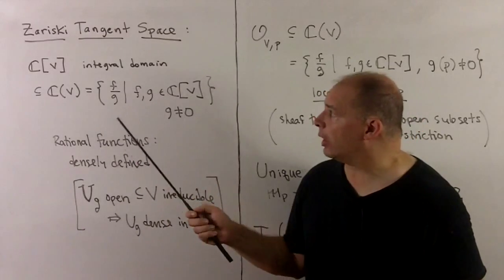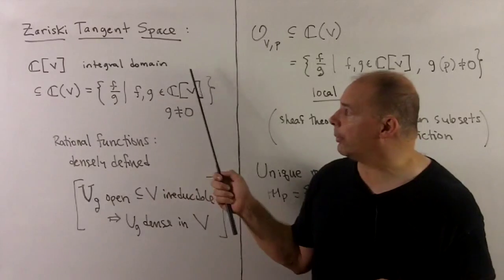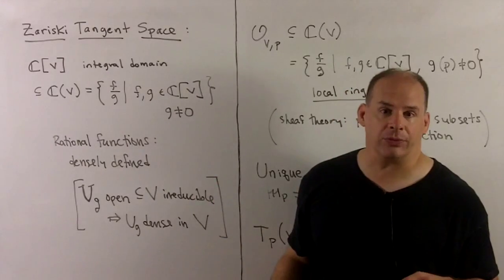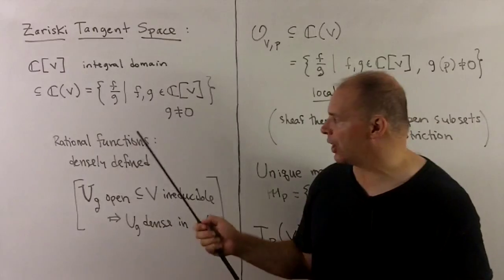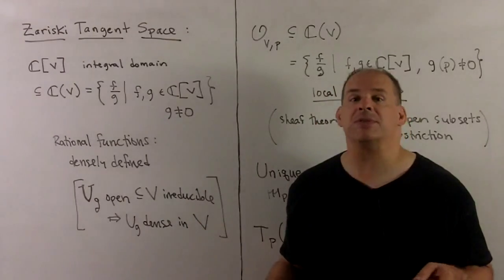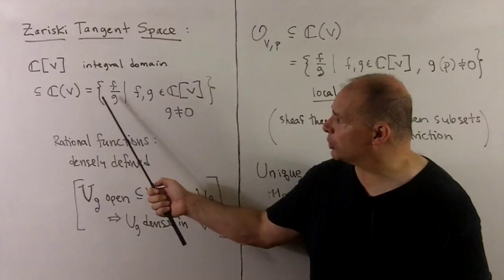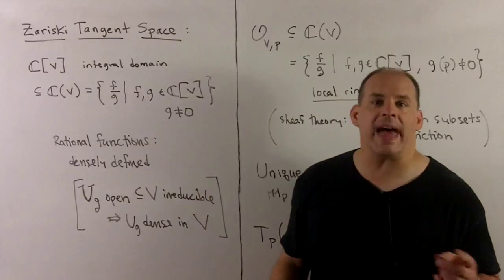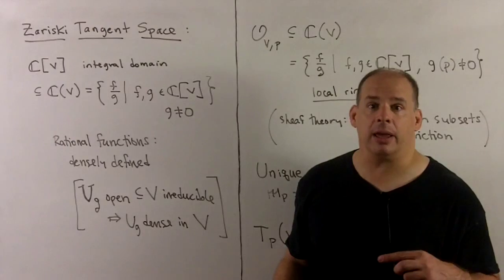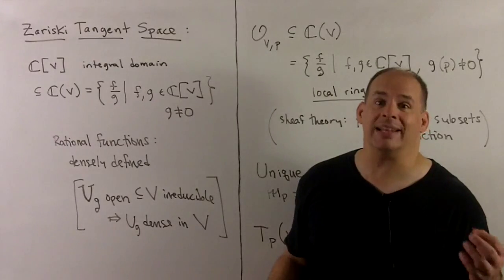Because V is irreducible, its coordinate ring is an integral domain, and we can form the field of fractions—the rational functions on V. These functions are only densely defined on V: we have to throw away all points where G = 0. But then that gives us an open subset in V. And because V is irreducible, we get densely defined.